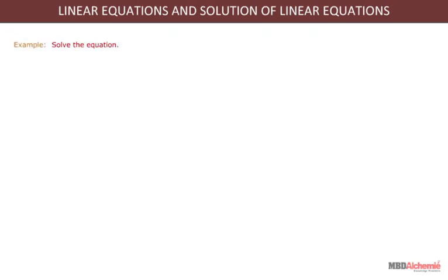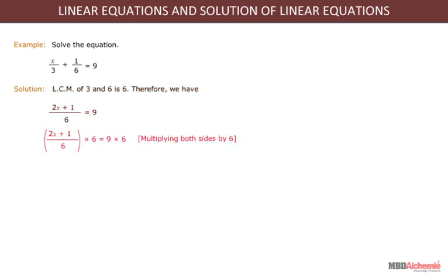Let us learn how to solve a linear equation. Solve the equation, X upon 3 plus 1 upon 6 is equal to 9. LCM of 3 and 6 is 6. Therefore, we have 2X plus 1 divided by 6 is equal to 9. On multiplying both sides by 6, we get 2X plus 1 is equal to 54. Now, subtracting 1 from both sides, we get 2X equals to 53. It gives X is equal to 53 upon 2.